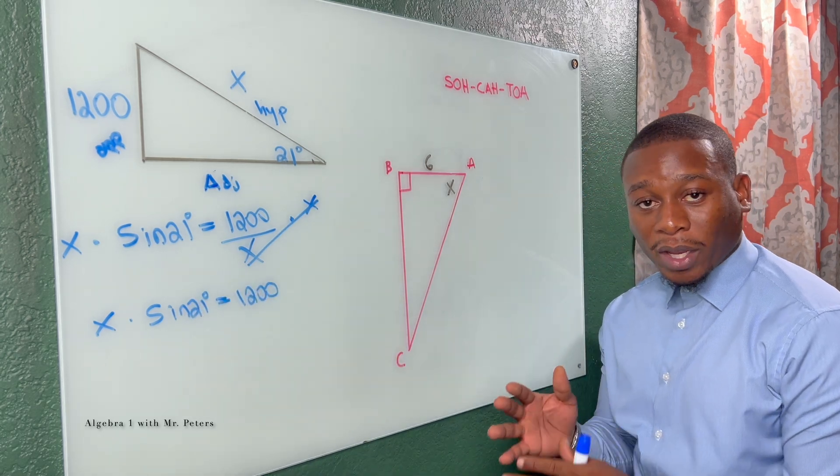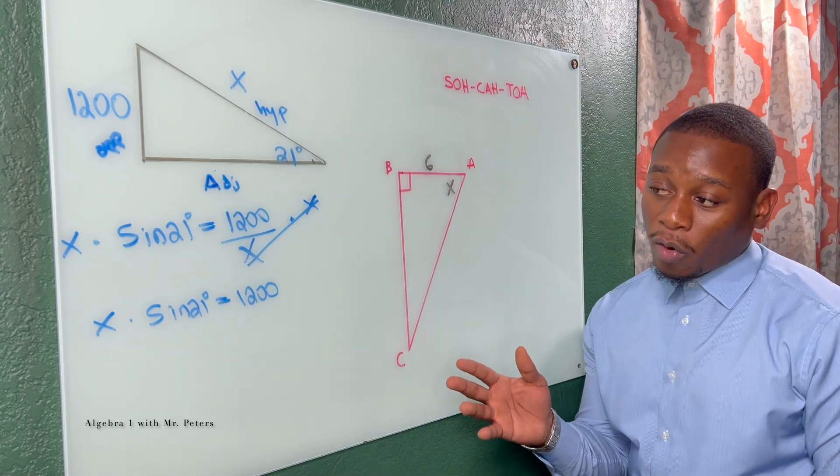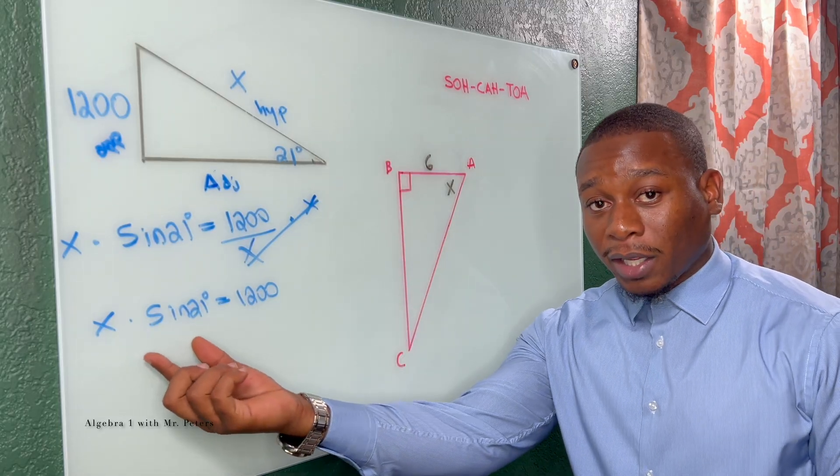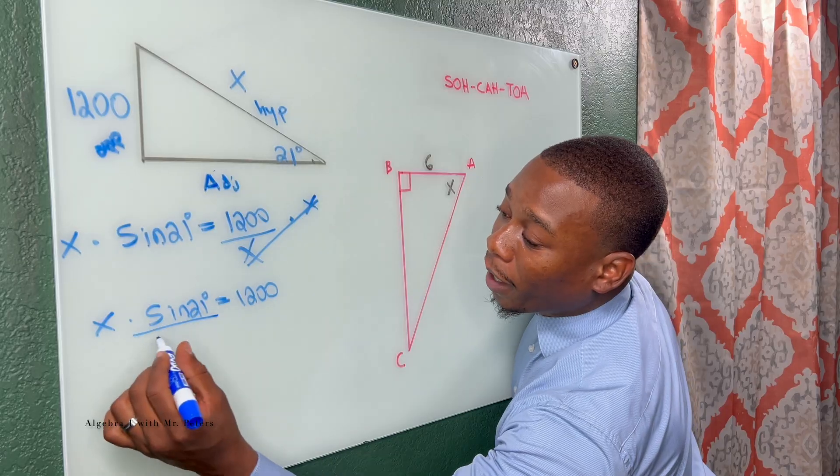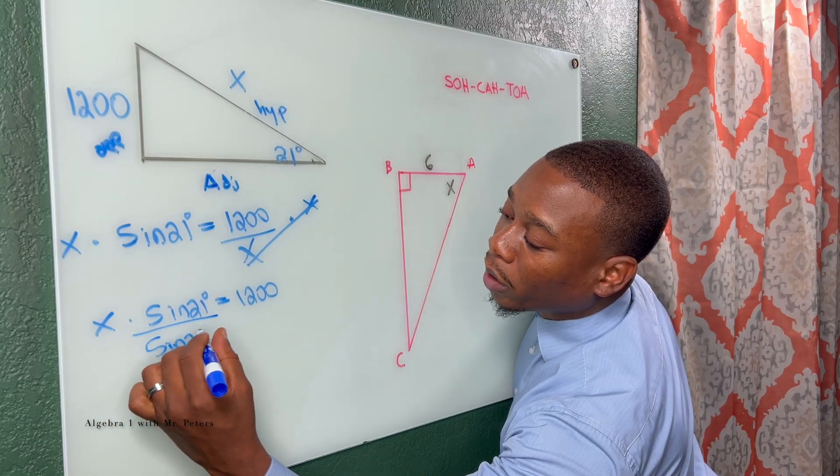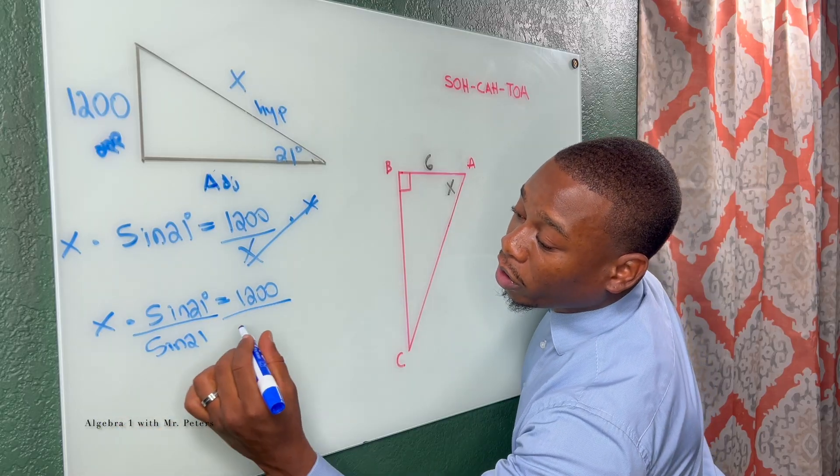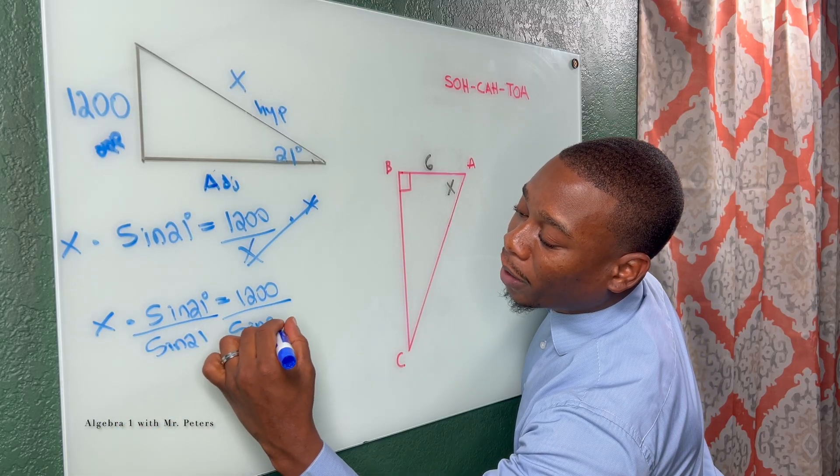So for us to now get X by itself and figure out what is the hypotenuse, we're going to have to isolate X. And we're going to do that by dividing by sine 21 because we're multiplying it by right here. So we go on the other side, we do the same thing, divide by sine 21.